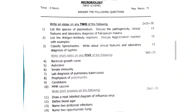Fourth question: bacterial growth curve. Fifth question: autoclave. Sixth question: innate immunity. Seventh question: lab diagnosis of pulmonary tuberculosis. Eighth question: prophylaxis of poliomyelitis. Ninth question: candidiasis. Tenth question: MMR vaccine.